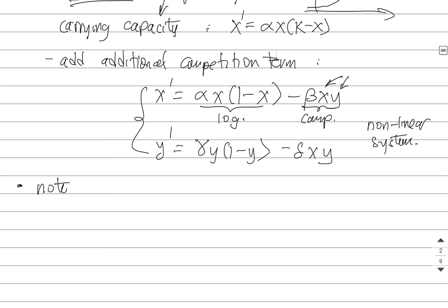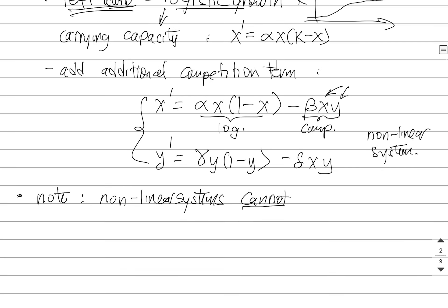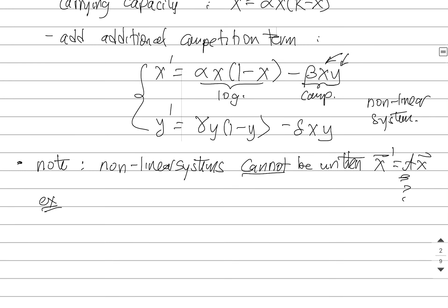Now note, in a non-linear system, you can't write it in matrix vector form. Non-linear systems cannot be written as x prime equals some matrix A x. It's not possible. In the pendulum example that we talked about, we had the following. Theta prime is u and u prime is negative g over l sine theta.